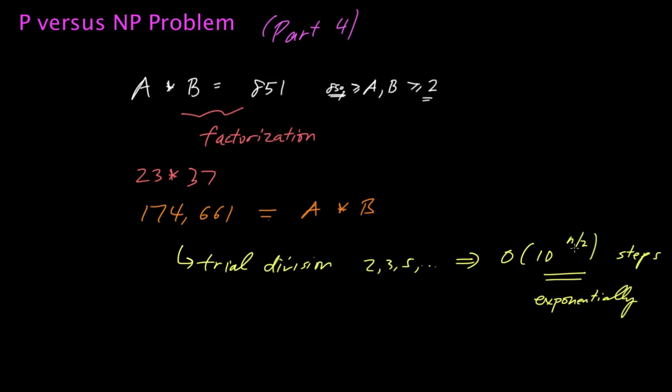To give you a sense, if you were just dealing with a number that's a few hundred digits long and you wanted to factor it, then 10 raised to the power n over 2 would be an astronomically big number.